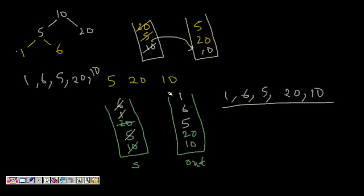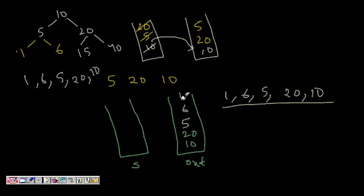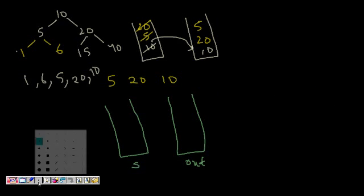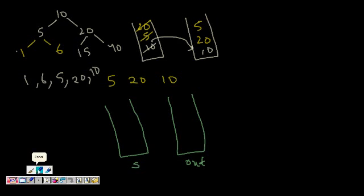Now let's confirm by adding nodes 40 and 15 as children of 20, making the tree a bit bigger, and see if our algorithm is still working.